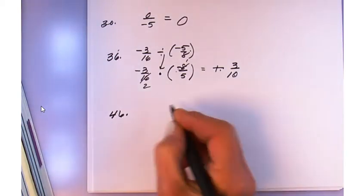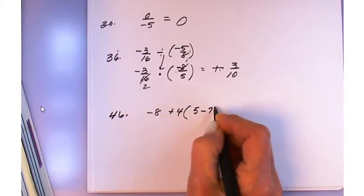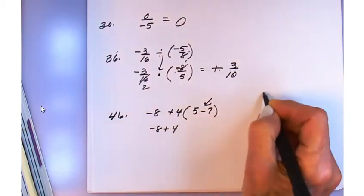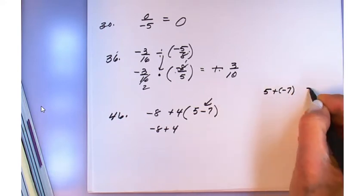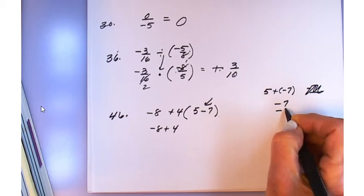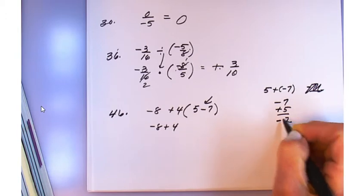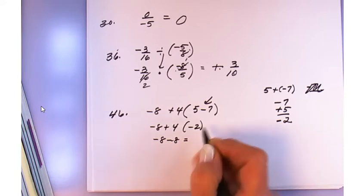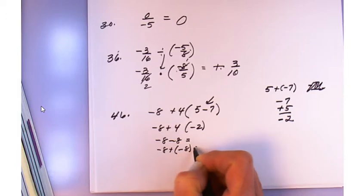Order of operations example: minus 8 plus 4(5 − 7). Go inside: 5 plus negative 7 gives negative 2. Then 4 times negative 2 is negative 8. Now minus 8 plus negative 8 — like signs — absolute sum gives negative 16.